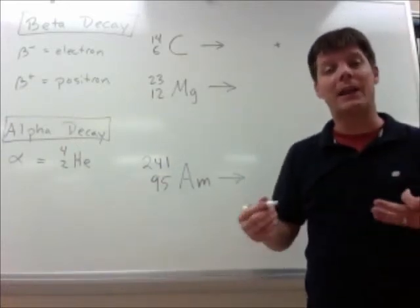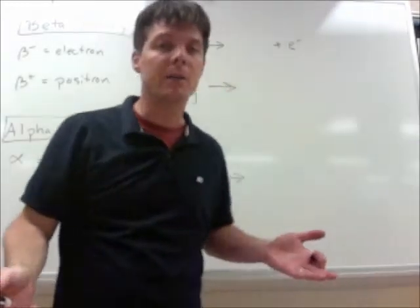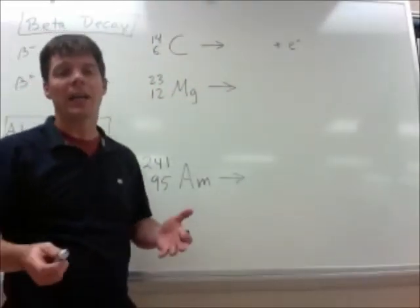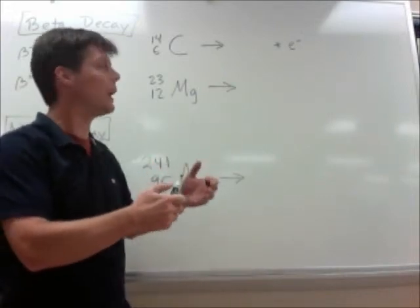One thing that's going to be given off is an electron, and I'm just going to write E minus to show that. Another thing that's going to be given off is something called an electron anti-neutrino. So I'm going to write that right over here.